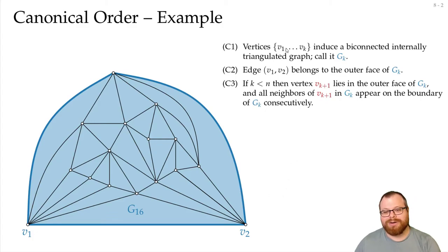Let's check if our conditions hold. Well, this graph is triangulated, so it's clearly biconnected and internally triangulated. v1, v2 is on the outer face, and k equals to n, so we don't have to check this.